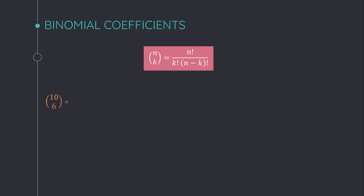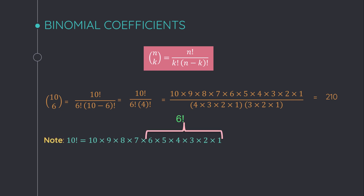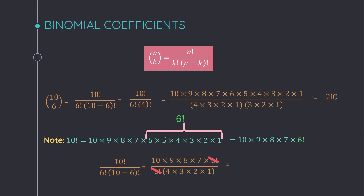Let me explain another example: 10 choose 6. By the definition, this is factorial 10 divided by factorial 6 times factorial 4. We can write factorial 10 as factorial 6 times the rest of the numbers, then cancel factorial 6 from the top and bottom and simplify. The answer is 210.